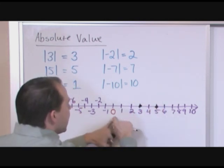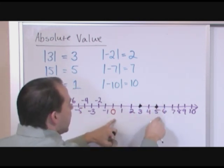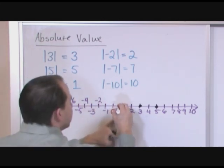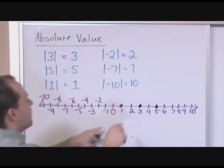Number five is five units away from zero. One, two, three, four, five. So the absolute value is five. The number one is one unit away from zero, so the absolute value is one.